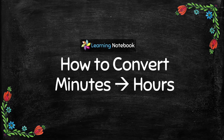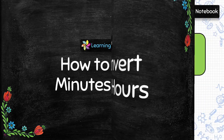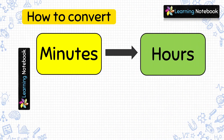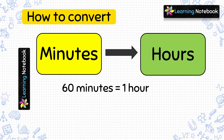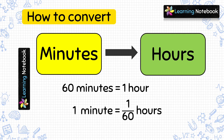Now let's understand how to convert minutes into hours. Here we have to convert minutes into hours, so first we need to know the value of 1 minute in terms of hours. We know 60 minutes equals 1 hour, which means 1 minute would be equal to 1 by 60 hours. Now let's see how to use this to solve the questions.